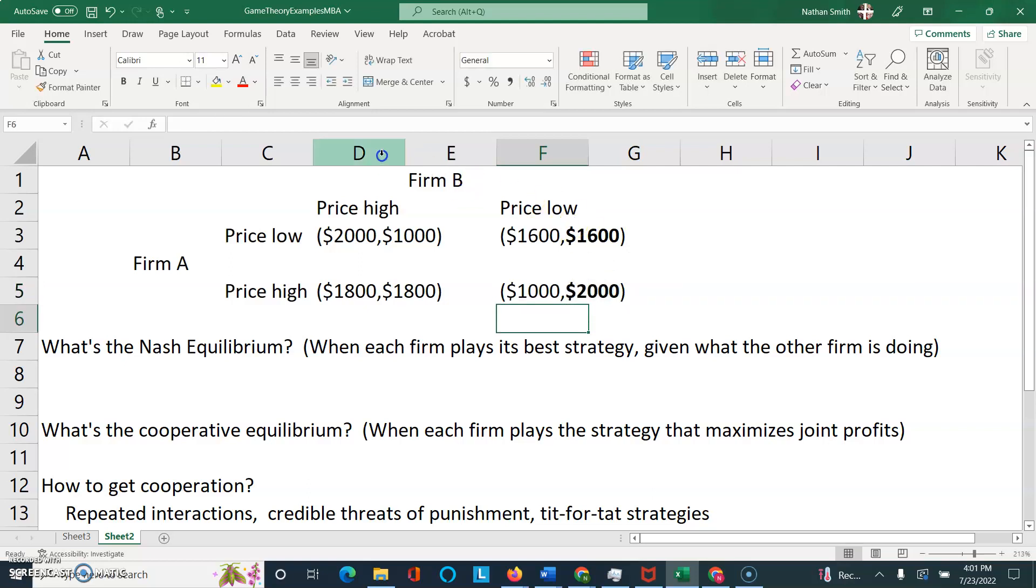Now, let's run the same trick going in the opposite direction. So, in other words, I'm going to highlight this column because that means Firm B has decided to price high. Now, I want to compare the two numbers on the left-hand side to figure out which is the better strategy for Firm A. Firm A could price low and get $2,000 or price high and get $1,800. $2,000 is the better profit. So, Firm A would price low, and I'm going to bold that outcome.